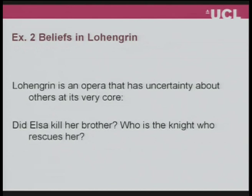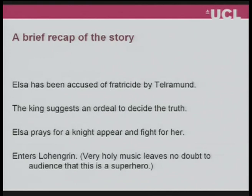That was example number one about choice and counterfactuals. Let me now talk about beliefs, turning to Lohengrin. Lohengrin almost very much asks for an analysis of the belief structure because it's an opera that is very much about uncertainty — uncertainty about others is at its very core. Essentially it's two questions at the center: whether Elsa killed her brother or not, and who the knight is who comes to rescue her. When the opera opens, we see Elsa being accused of having killed her brother. She's accused by Telramund, who is married to Ortrud.